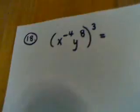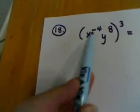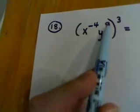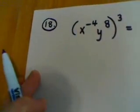So let's look at the paper. Let's look at the problem involved here. Question number 18 on your review: x to the negative fourth, y to the eighth, the entire quantity raised to the third power.